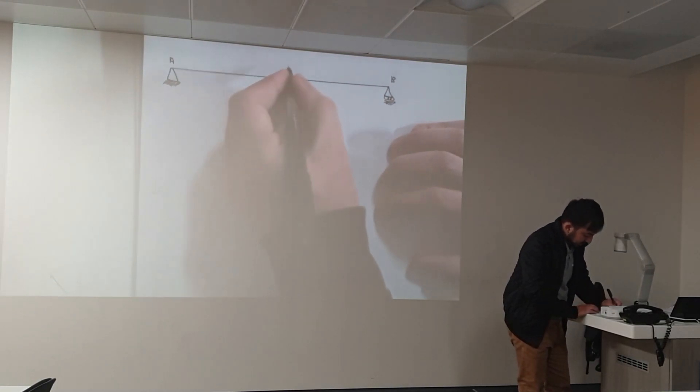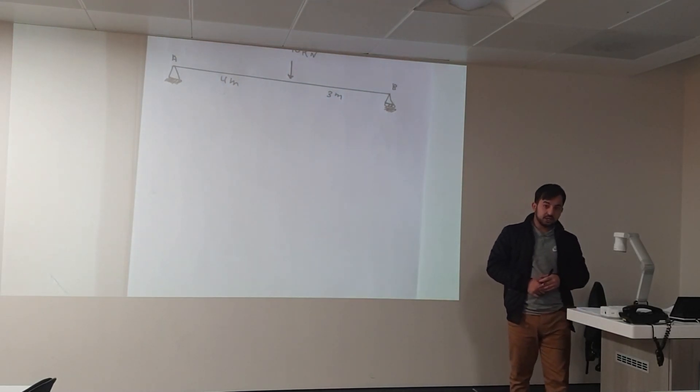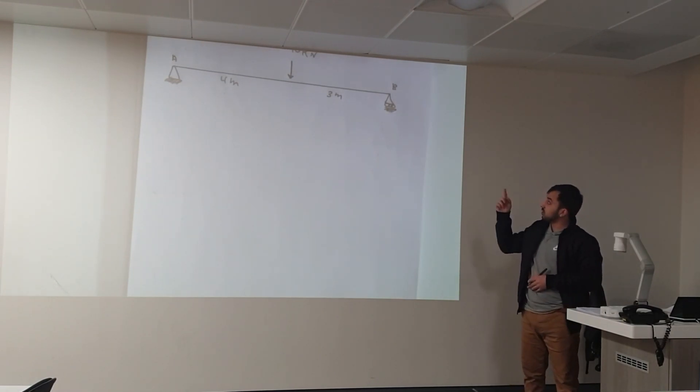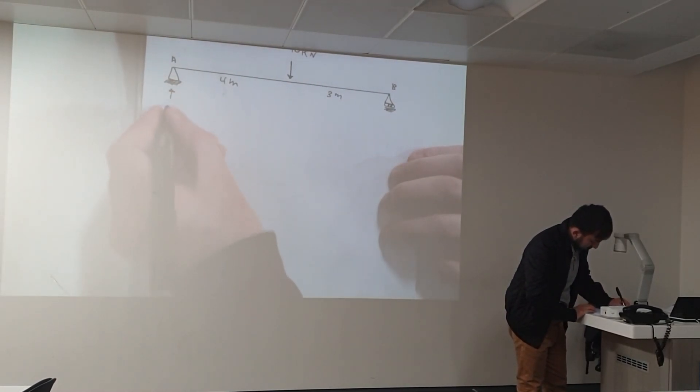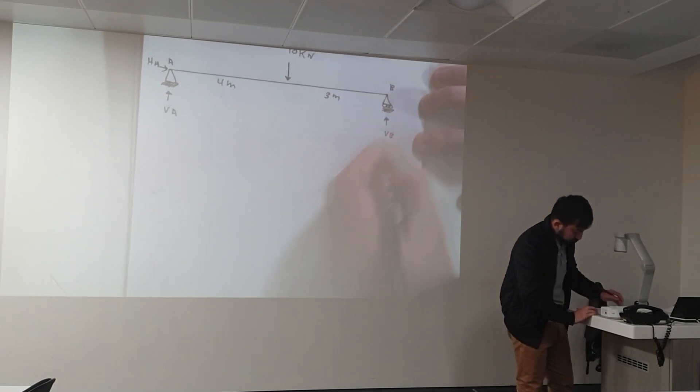We have a 10 kilonewton force acting 3 meters away from point B. So the distances are 3 meters and 4 meters. As I mentioned earlier, the pin support has two reactions: VA and HA. And the roller has only one support, which is VB.